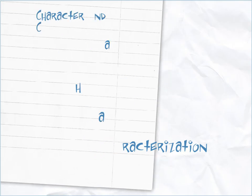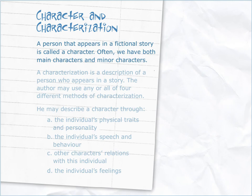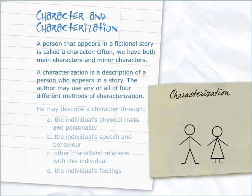Character and characterisation. A person that appears in a fictional story is called a character. Often we have both main characters and minor characters. A characterisation is a description of a person who appears in a story. The author may use any or all of four different methods of characterisation.